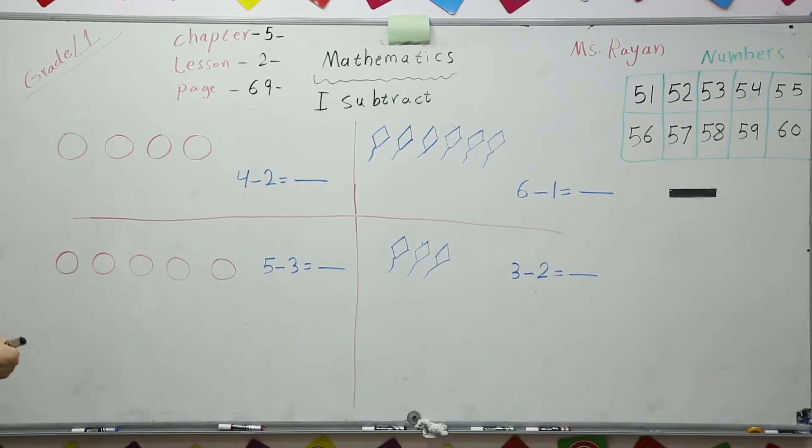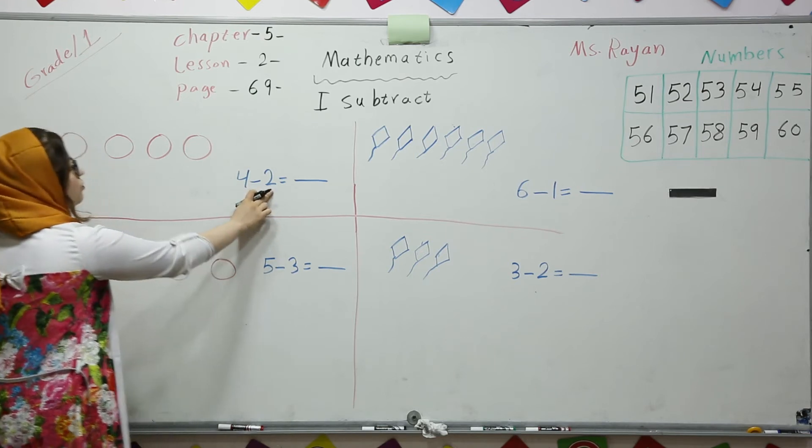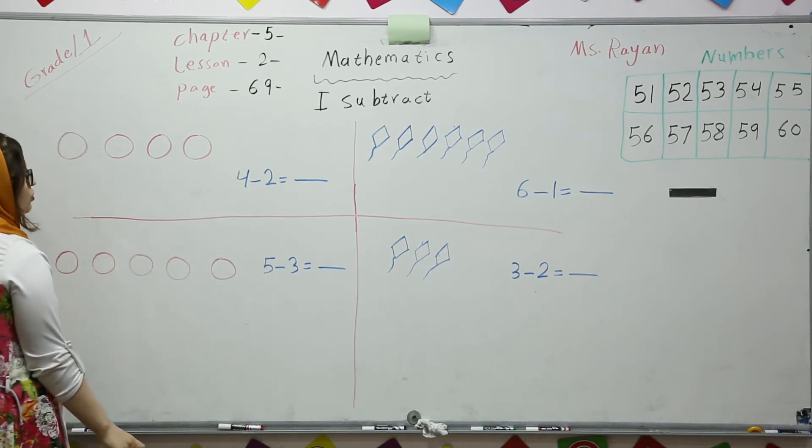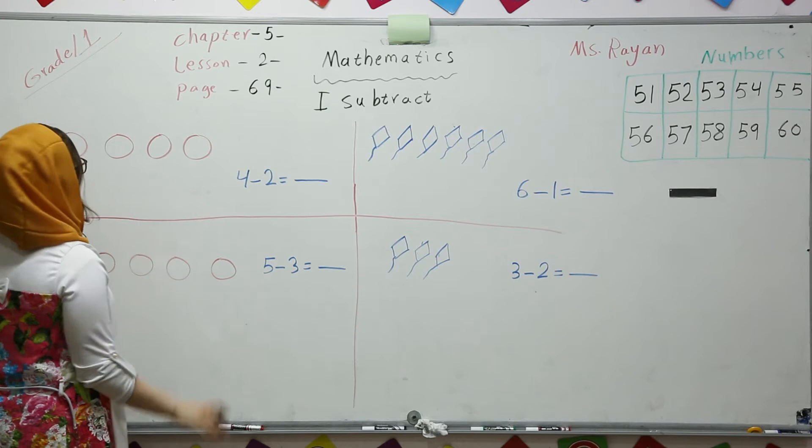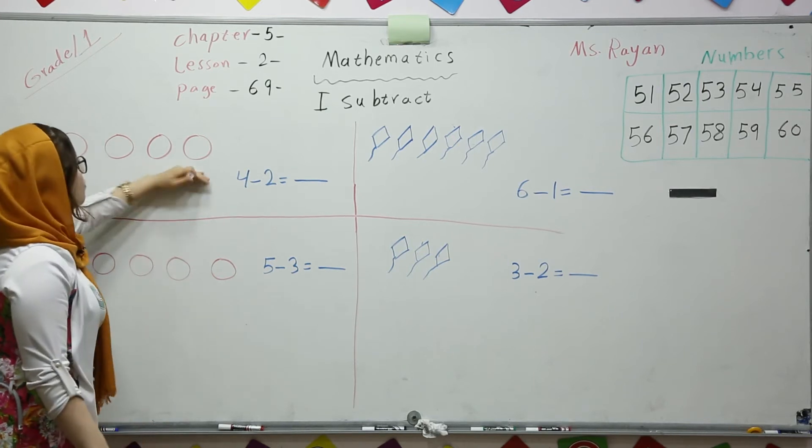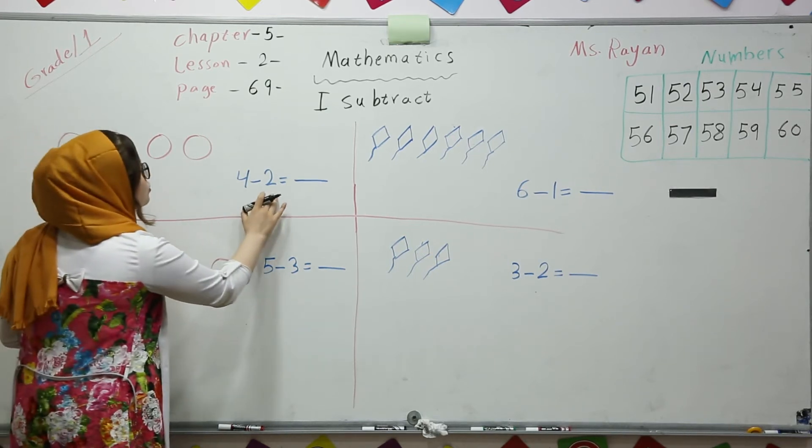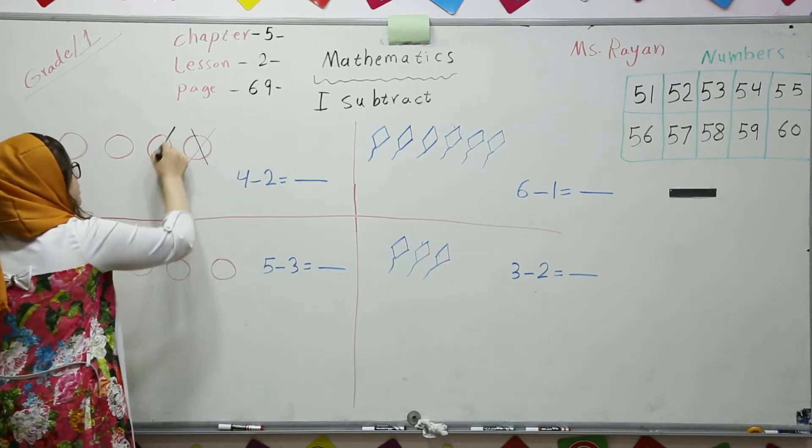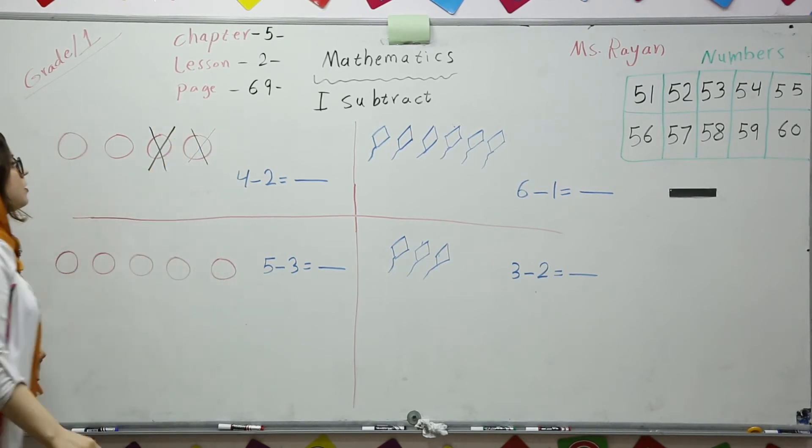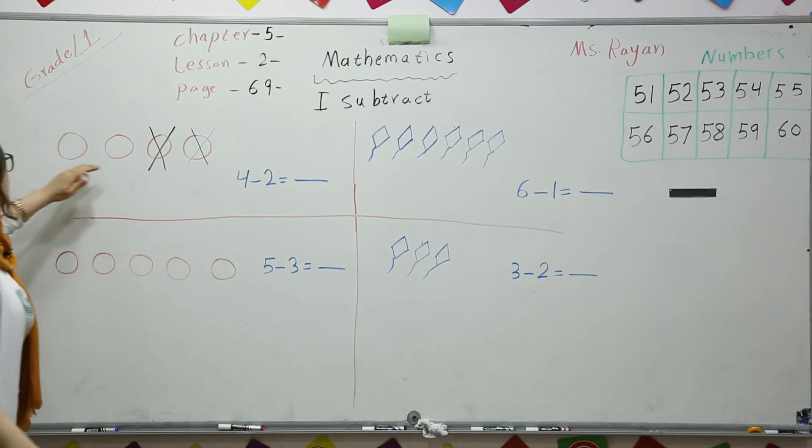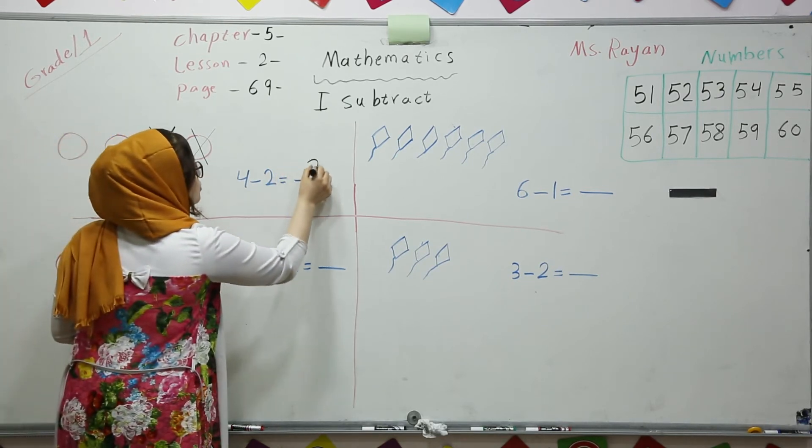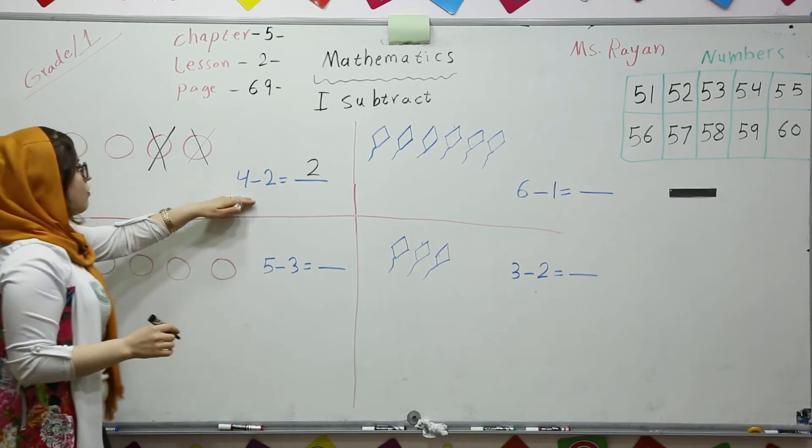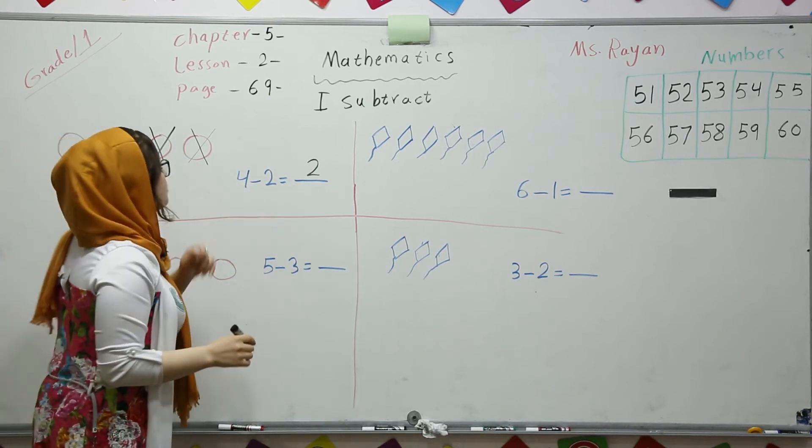So, in the equation it says 4 minus 2. Look, we have got 4 balls, 1, 2, 3, 4, you see? It says minus 2, so you are going to cross out 2, like this. So, how many are left? 1, 2. 2 are left. 4 minus 2 equals 2, okay?